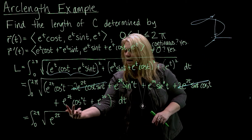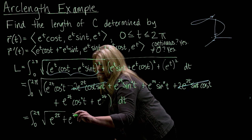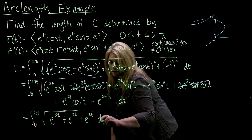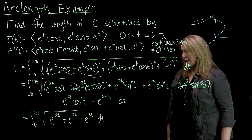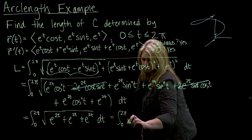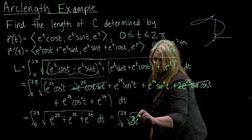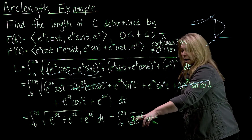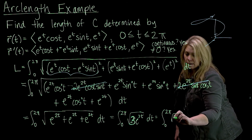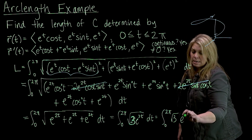After applying the Pythagorean identity twice and adding the lone e to the 2t from the k component, I have three copies of e to the 2t inside the radical — so I can write that as 3 e to the 2t. Taking the square root gives square root of 3 times e to the t, since e to the 2t is (e to the t) squared. So the integral simplifies to the integral from 0 to 2 pi of square root of 3 times e to the t dt.